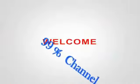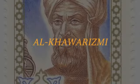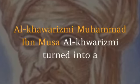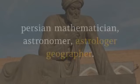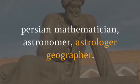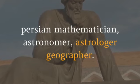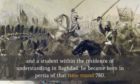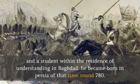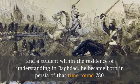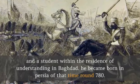Welcome to 99% channel. Al-Khawarizmi, Muhammad ibn Musa Al-Khawarizmi, was a Persian mathematician, astronomer, astrologer, geographer, and a student within the House of Wisdom in Baghdad. He was born in Persia around 780.